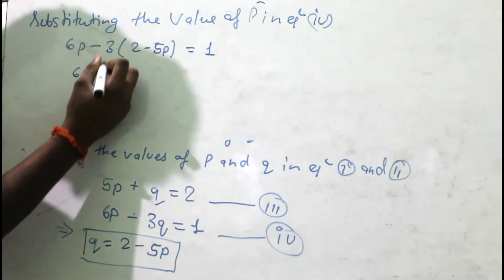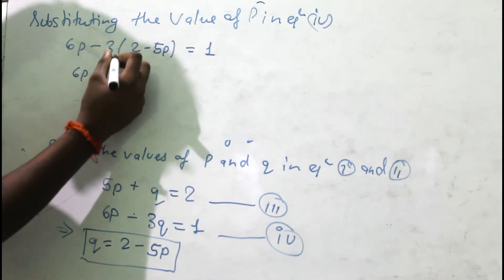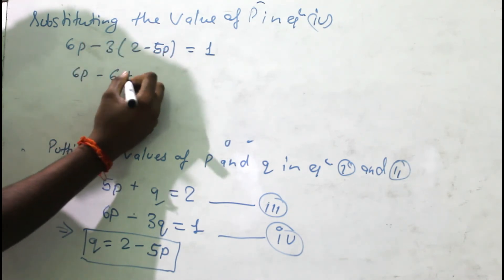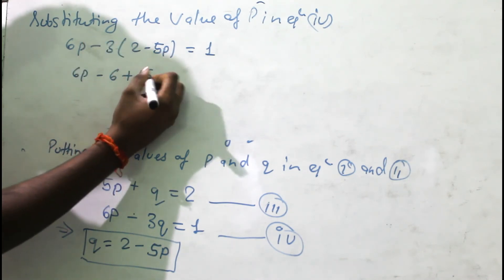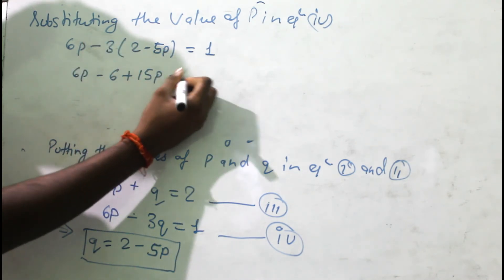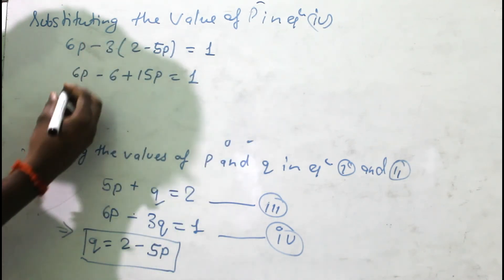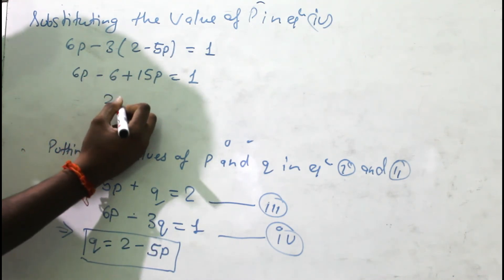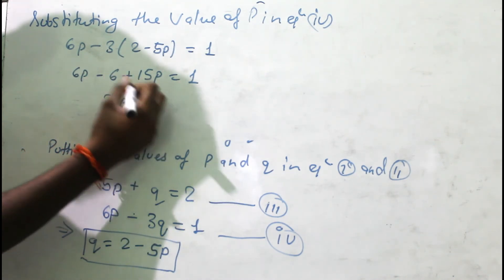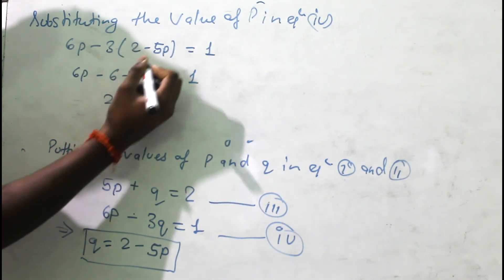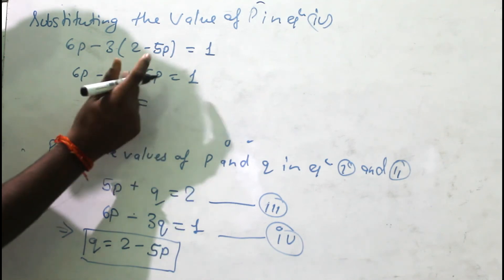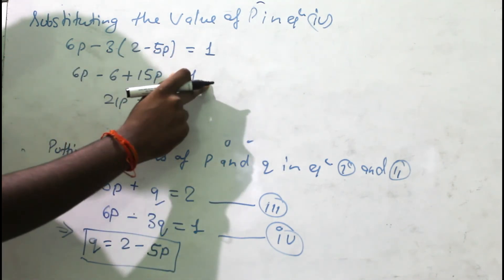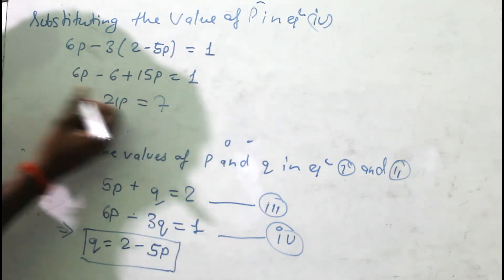Expanding: 6p - 6 + 15p = 1. Combining 6p and 15p gives 21p. Moving -6 to the right side gives +6, so 21p = 1 + 6 = 7.